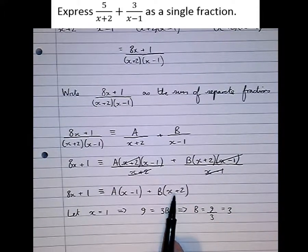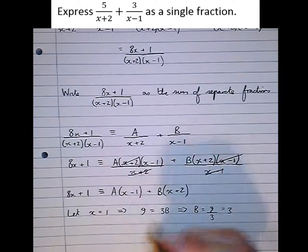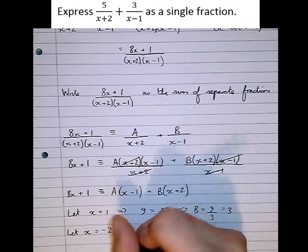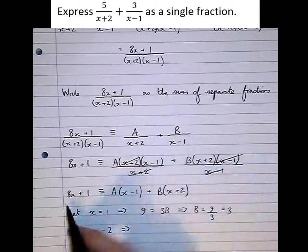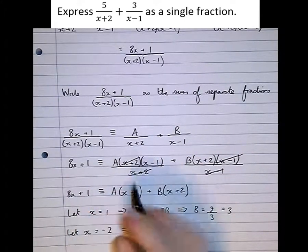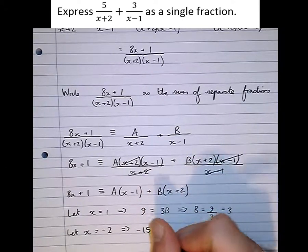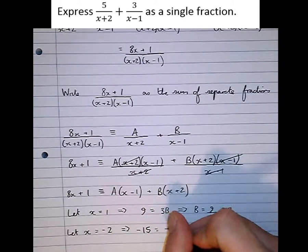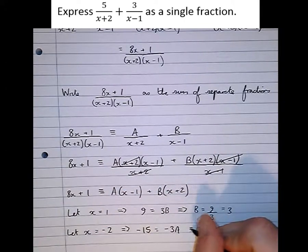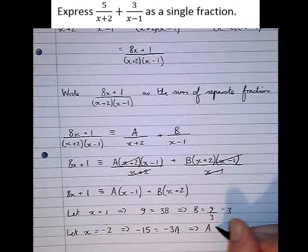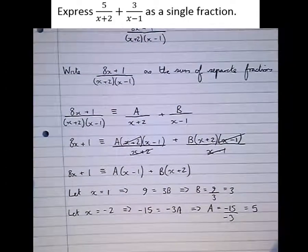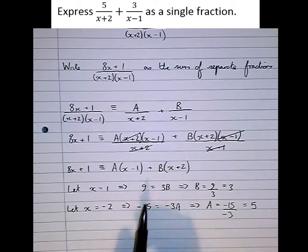Similarly, if we substitute x = −2, the B term disappears. So −16 + 1 = −15 equals A(−2 − 1) = −3A, which means A = −15 over −3, which is 5. Now we have our A and B.